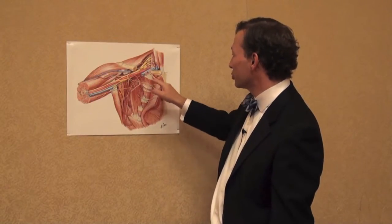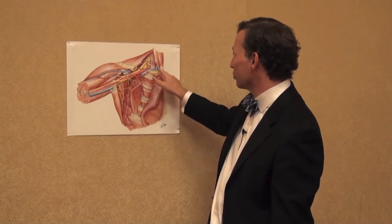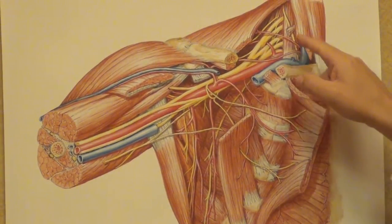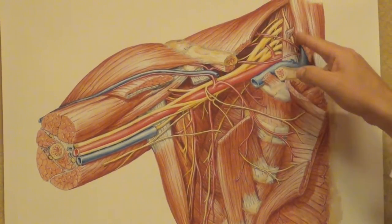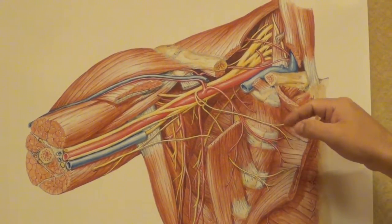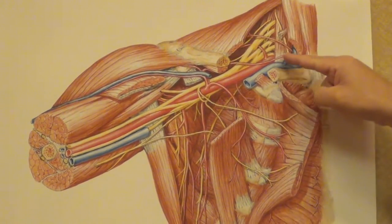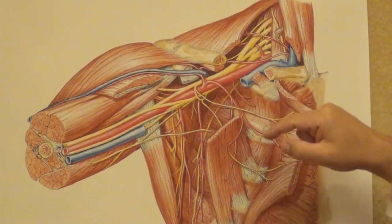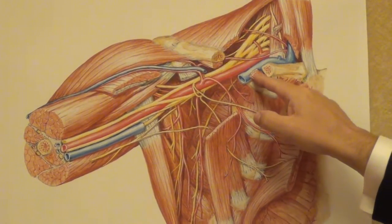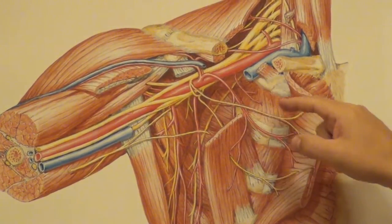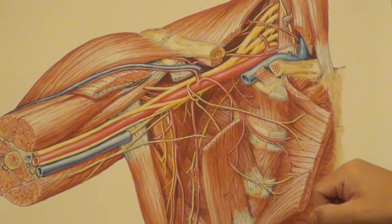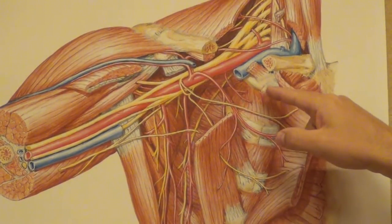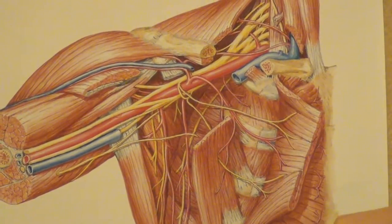Vessels that are shown include branches of the thoracervical trunk, the suprascapular and transverse cervical branch along the anterior scalene. We see the phrenic nerve very nicely, the anterior scalene muscle separating the subclavian vein from the subclavian artery. The subclavius muscle has been transected so that you could see deep to that the anatomy being depicted. We see the first rib with the anterior scalene attaching.